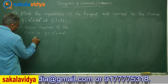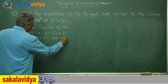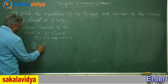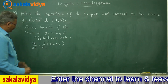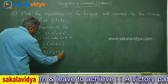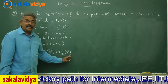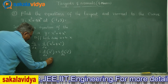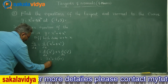Differentiating both sides with respect to x: dy/dx equals d/dx of x³ plus 4 times d/dx of x². The derivative of x³ is 3x², and the derivative of x² is 2x. So dy/dx equals 3x² plus 4 times 2x, which gives dy/dx equals 3x² plus 8x.